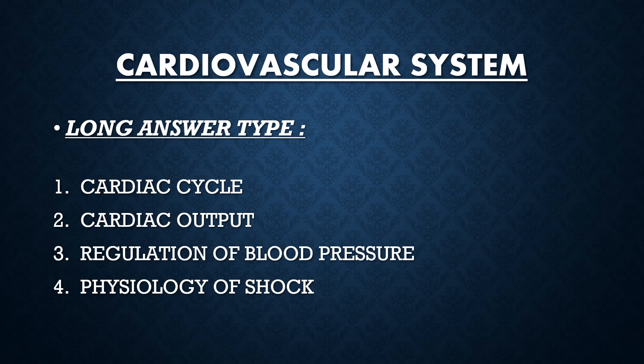First, we have the cardiovascular system. In long note from this unit, the most frequently asked questions are cardiac cycle and cardiac output. These two are the most important questions asked from this unit. In cardiac cycle and cardiac output, I have already mentioned the points which are needed to be written. Please watch our videos on human physiology CVS, where we have mentioned the stages and phases of cardiac cycle and cardiac output, as well as the factors affecting cardiac output and methods for measuring it.